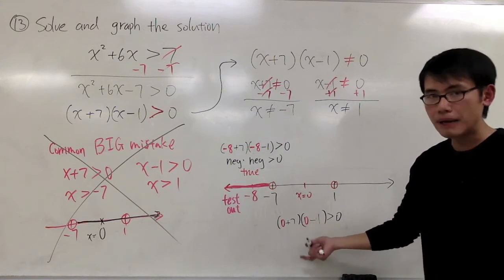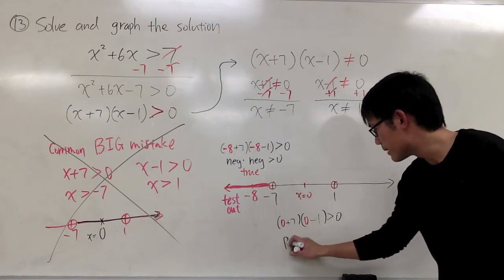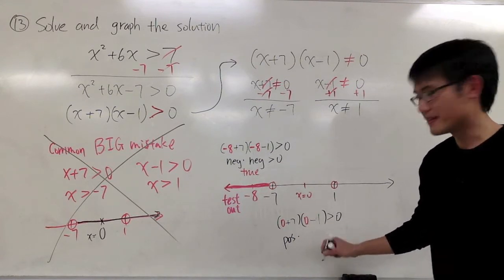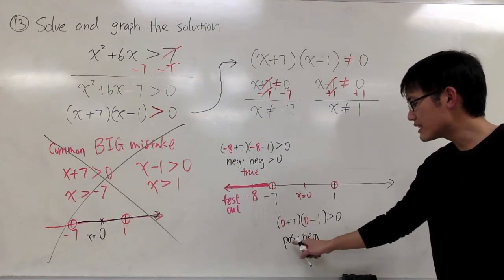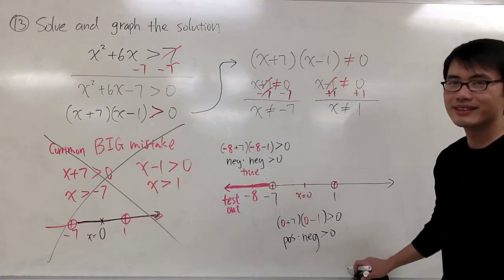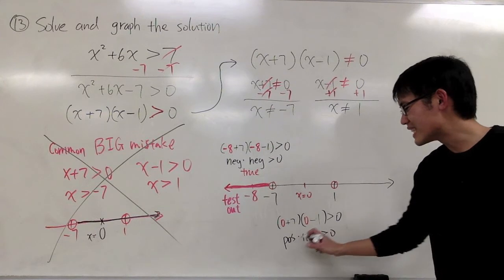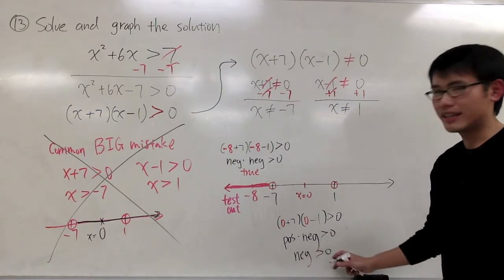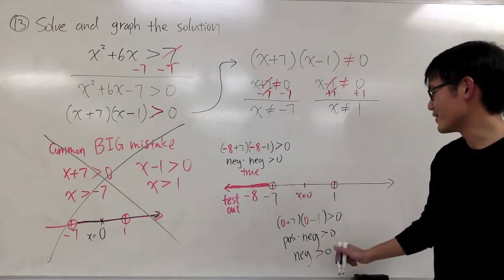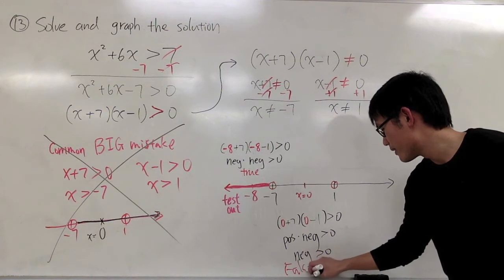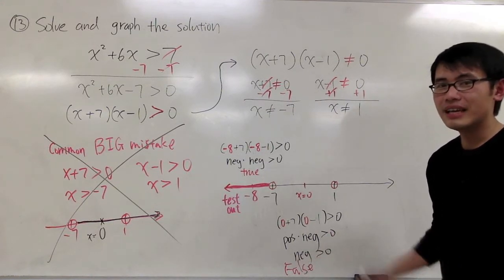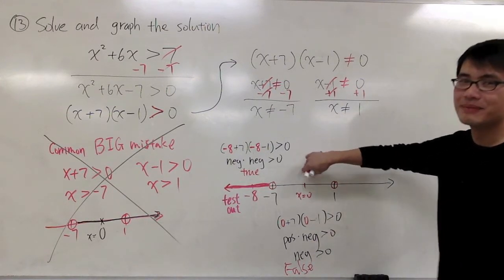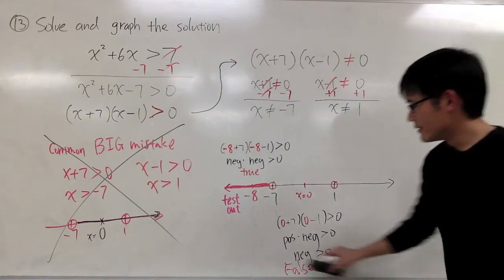Times zero minus one is negative. Positive times a negative, do we get greater than zero? No, because positive times a negative is negative. You see, a negative number cannot be greater than zero. This is false. If the test point turns out to be false, you're not going to color this part for the solution set.